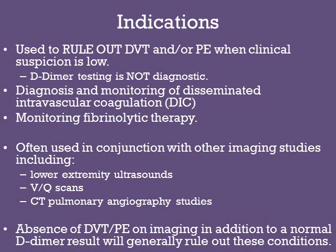With low clinical suspicion, a normal or negative D-dimer test may be enough to rule out a PE or DVT from your differential. However, many providers will still order imaging studies like lower extremity ultrasounds, VQ scans, and CT pulmonary angiography studies for confirmation. A negative D-dimer test in combination with the absence of DVT and PE findings on imaging studies will generally rule out these conditions.